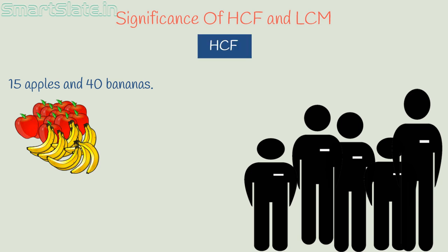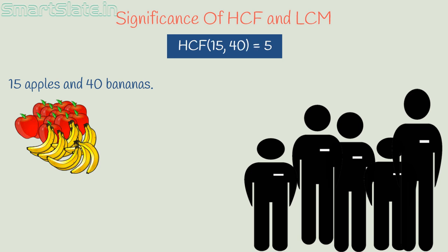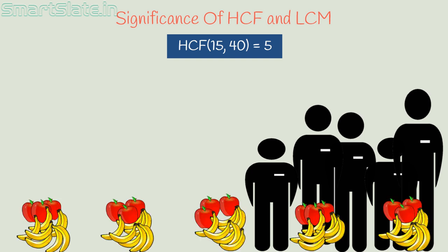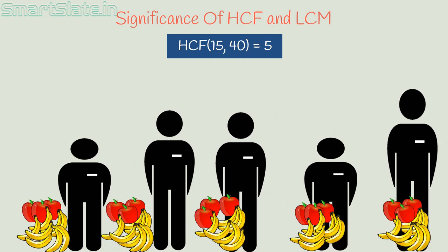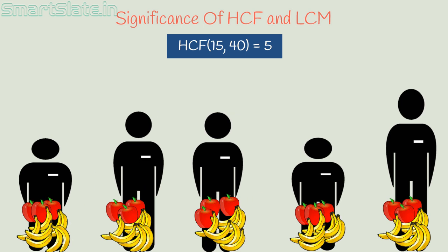Yes, the HCF of 15 and 40 is the answer. That is, you can help 5 orphans — 5 is the HCF of 15 and 40. To each orphan, you can give 3 apples and 8 bananas. This way, you can distribute apples and bananas equally.